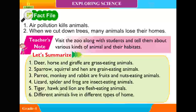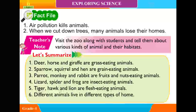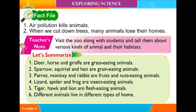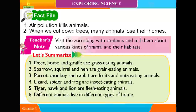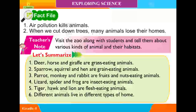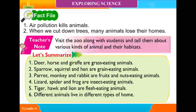Let's Summarize: Deer, horse and giraffe are grass-eating animals. Sparrow, squirrel and hen are grain-eating animals. Parrot, monkey and rabbit are fruit and nut-eating animals. Lizard, spider and frog are insect-eating animals. Tiger, hawk and lion are flesh-eating animals. Different animals live in different types of homes.